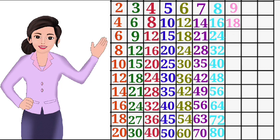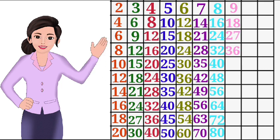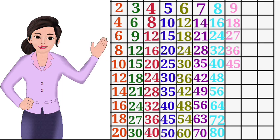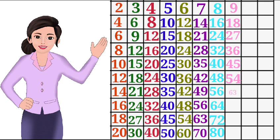9 3s are 27, 9 4s are 36, 9 5s are 45, 9 6s are 54.